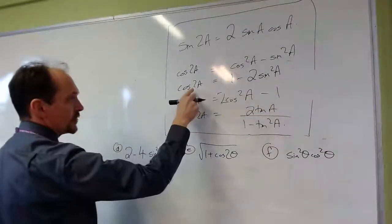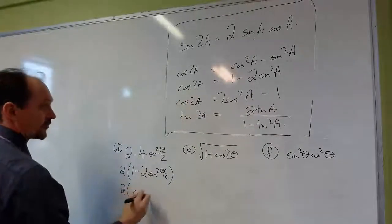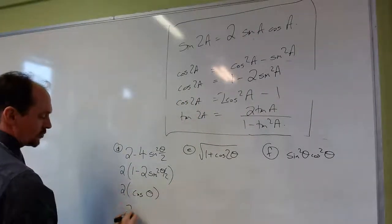So A is theta over 2. Two of those are just theta. So I've just got 2 cos theta.